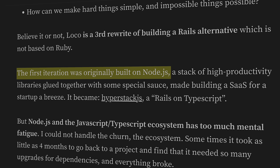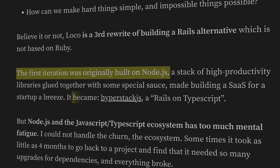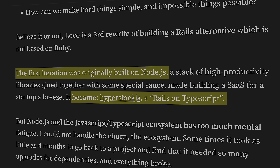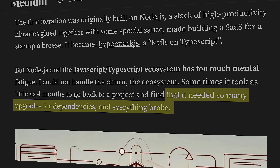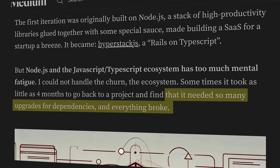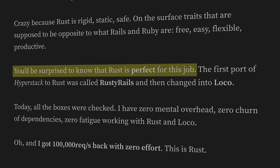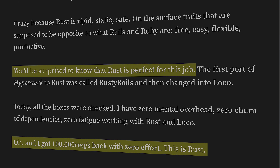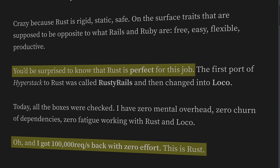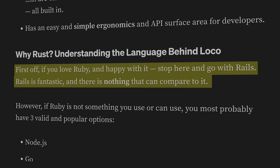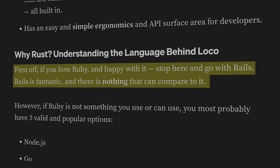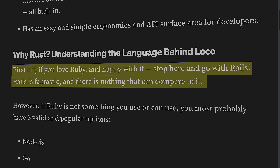He says the first iteration was originally built on Node.js, which became HyperStack.js — Rails on TypeScript. But then apparently things went downhill. He got frustrated with the JavaScript ecosystem, with updates constantly breaking his project. So then he tried the same approach with Rust and had a better result, and then he revels at the performance numbers he was able to get with Rust. One of the things I thought was really cool is that instead of touting his framework as being objectively better than Rails, he actually goes out of his way to suggest that people continue to use Rails if they love Ruby.